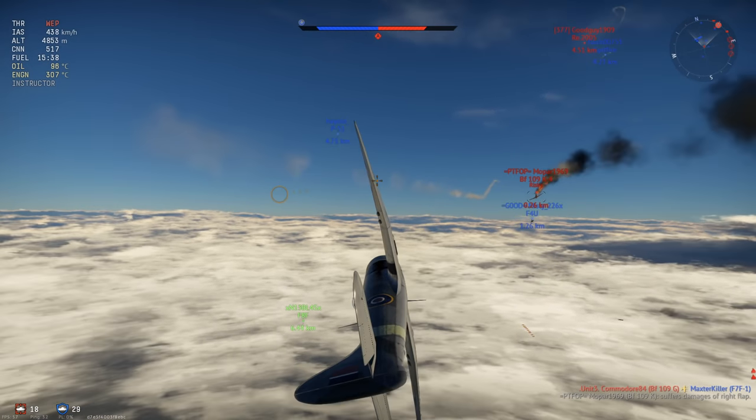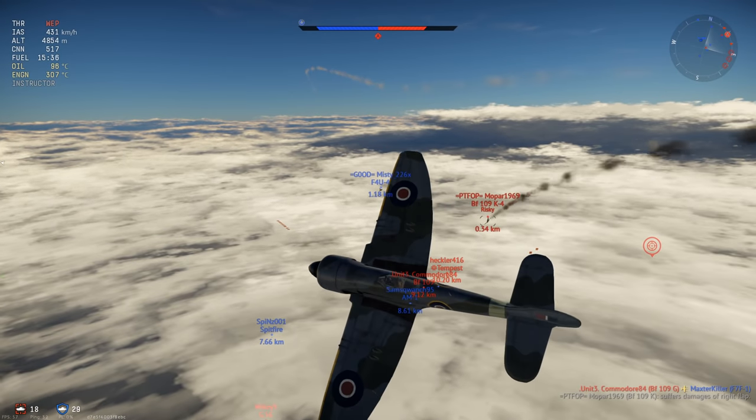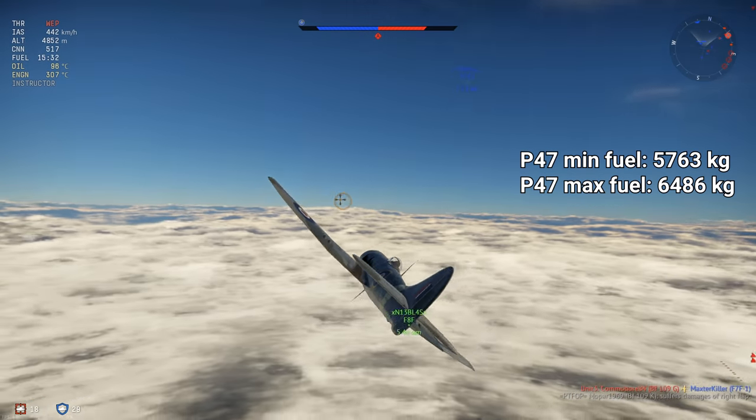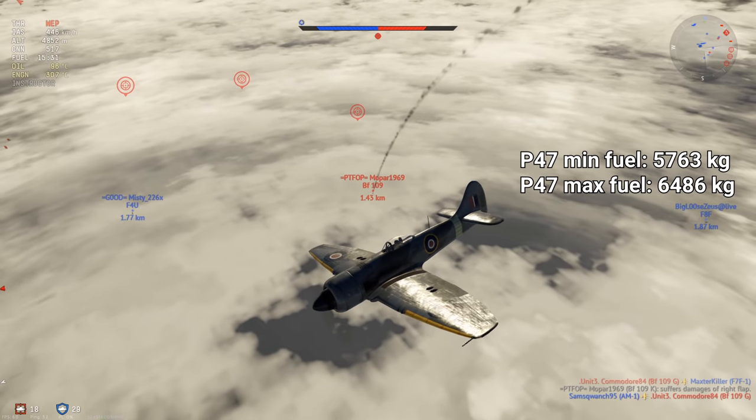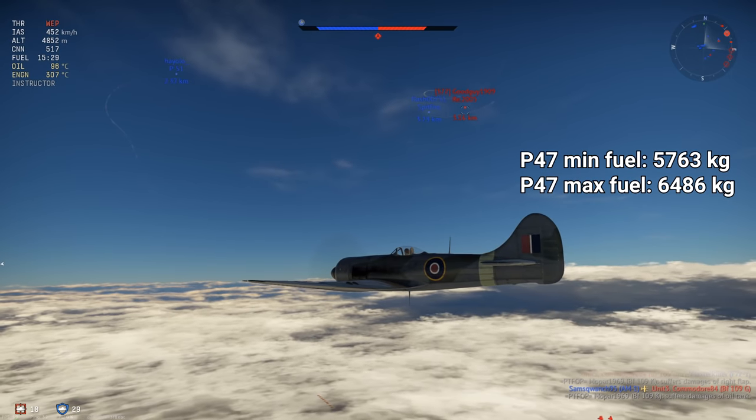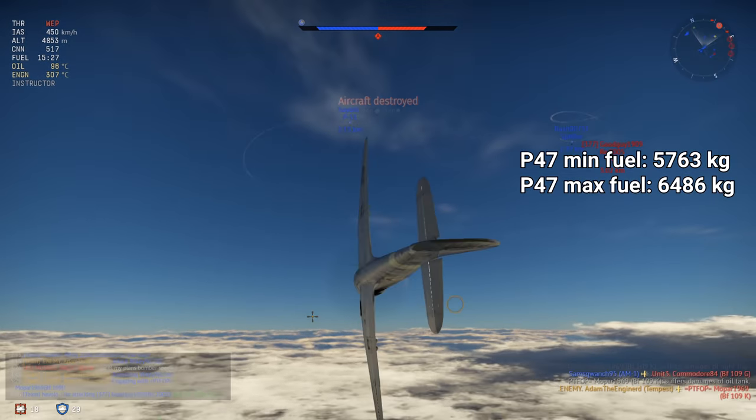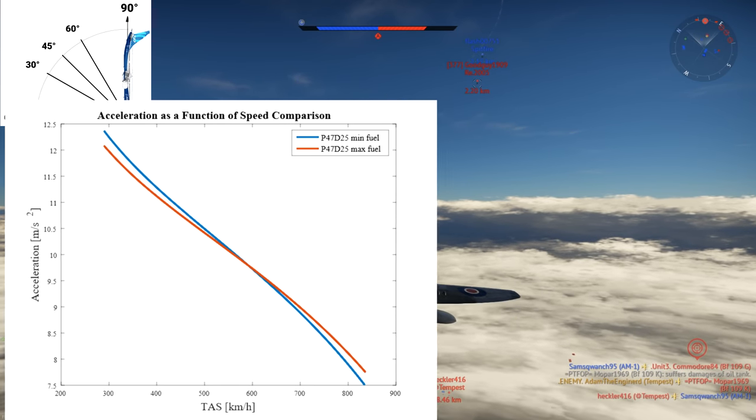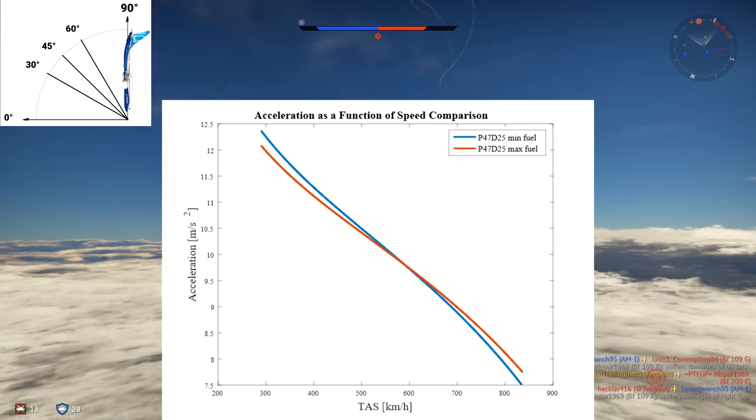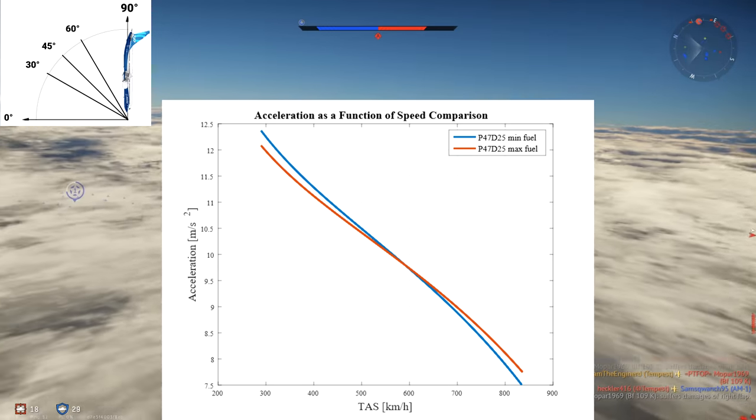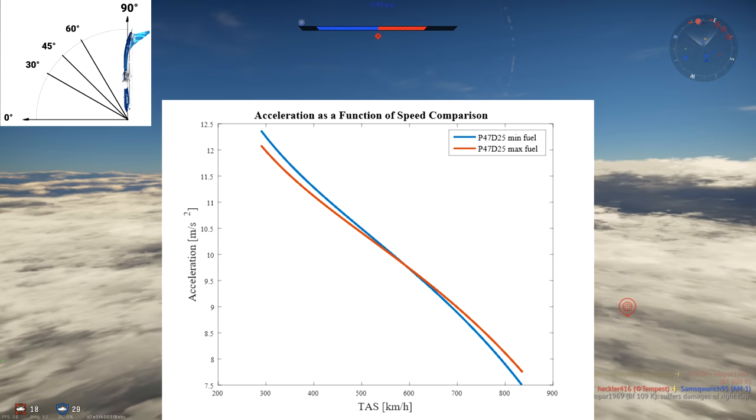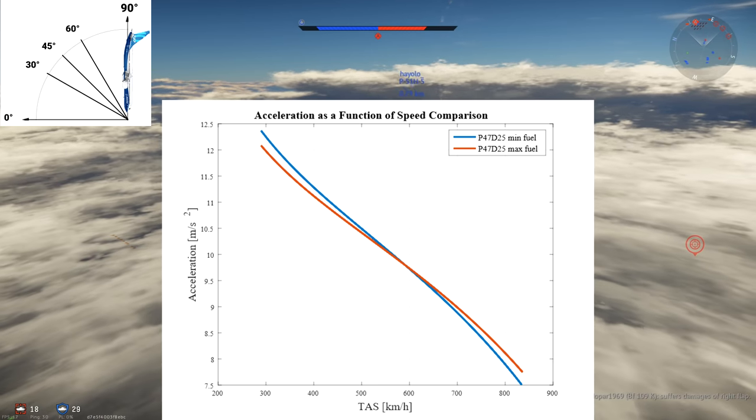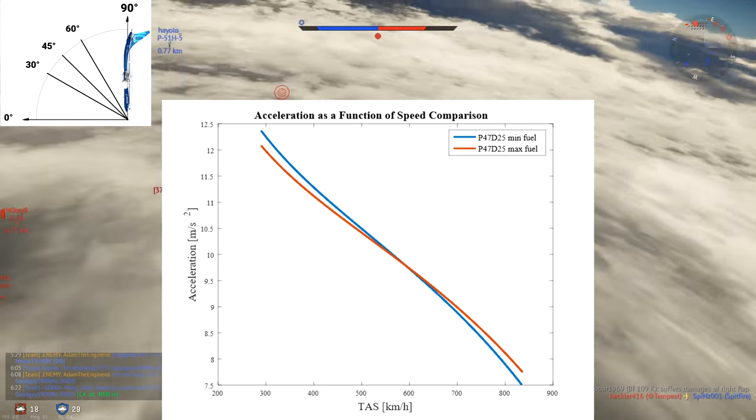To do that, we'll compare the dive performance of a minimum fuel P-47 and a maximum fuel P-47. The maximum fuel P-47 is 700 kilograms or 12% heavier than the minimum fuel P-47. Let's simulate the dive and graph their respective accelerations as a function of speed. The acceleration as a function of speed graph shows how quickly the aircraft are accelerating in a 90 degree dive. The aircraft with a higher acceleration has the advantage in a dive. This graph contains a lot of information if you know where to look, so let's go through it.